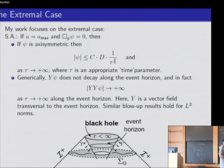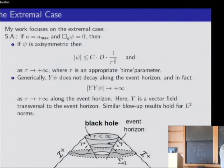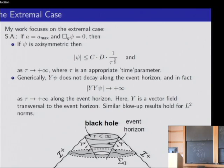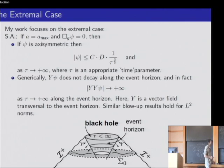Under scalar perturbations, the event horizon of extremal black holes is unstable. This was something entirely new in the context of this linearized stability problem. We also have similar blow-up results for L2 norms. This blow-up does not depend at all on the size of the initial data — the initial data can be as close as we want to zero, and generically the blow-up still occurs.